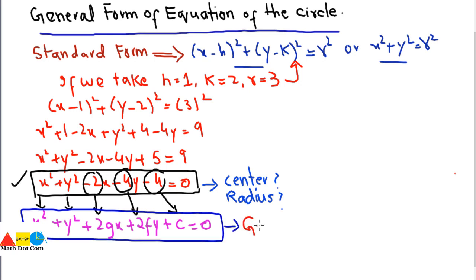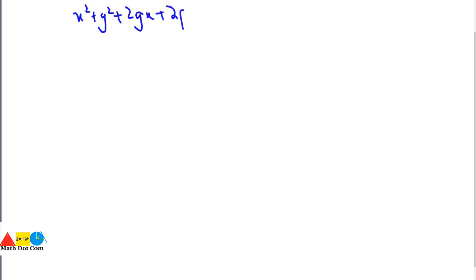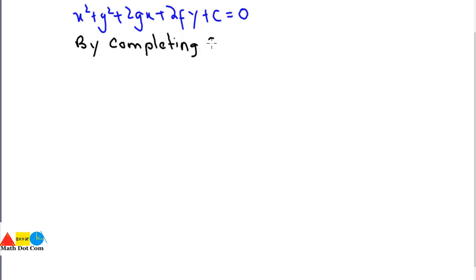This is the general form of equation of the circle. Now let's see how you can find the radius and center from such an equation. To do that, we need to derive the center and radius from the general form x² + y² + 2gx + 2fy + c = 0. By looking at this equation alone we cannot identify the center and radius, so we have to use the completing-the-square method to convert it into standard form.